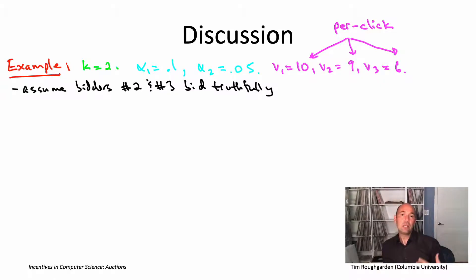First, let's see what would the utility be of that first player if they do, in fact, bid truthfully, if they bid 10. If the first bidder bids 10, it's obviously going to come out first in the ranking of the bids. The GSP auction will give it the top slot, the best slot, which is a click-through rate of alpha sub one. What then is the utility that bidder number one gets from getting displayed in slot number one?